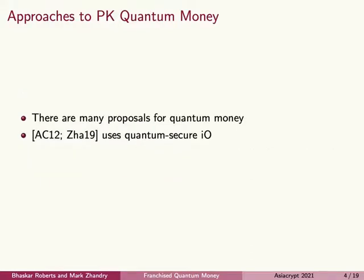So what is the state of public-key quantum money? We don't know of any construction of public-key quantum money from well-studied assumptions. I'm particularly interested in Aaronson, Cristiano, and later Zandry's construction of public-key quantum money from indistinguishability obfuscation. AC-12 proposed a construction in which the banknotes are subspace states, and Zandry showed how to verify these banknotes using post-quantum-secure indistinguishability obfuscation. We don't have a construction of post-quantum-secure IO, so we need a new way to verify the banknotes — and that's the goal of this work.